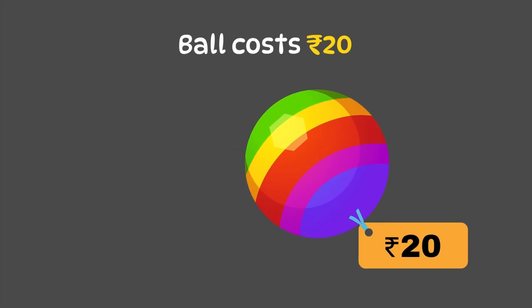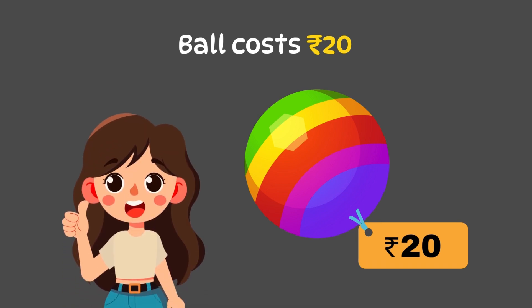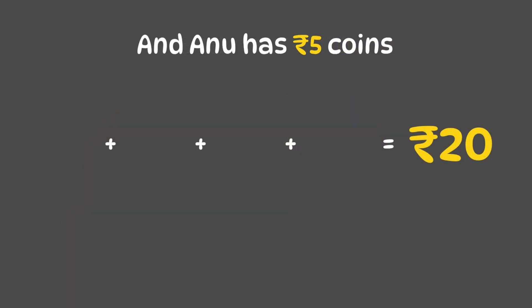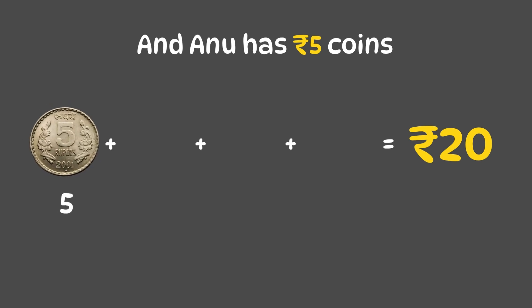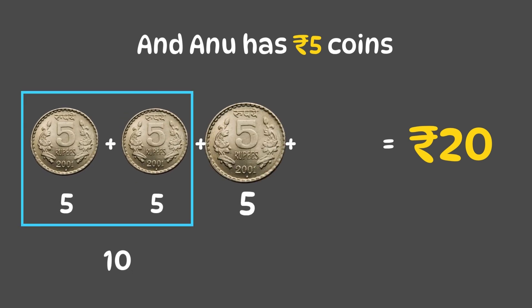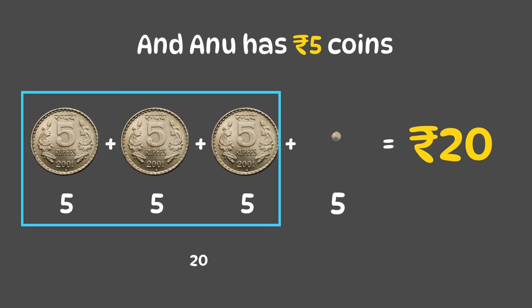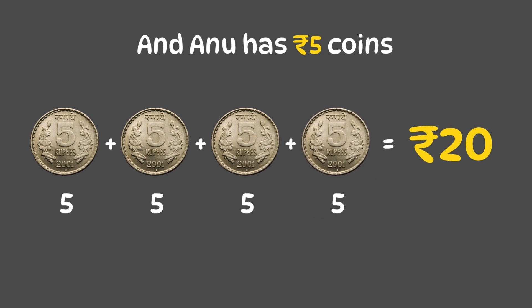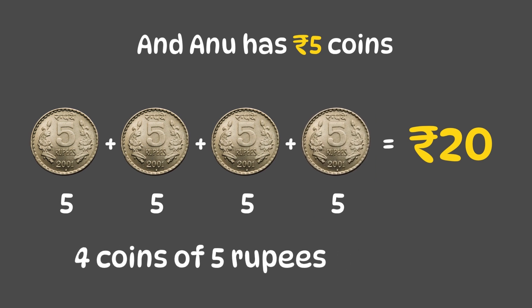This ball costs 20 rupees, and Anu has 5 rupee coins. Let's count how many coins Anu would need to make 20 rupees. 5, 10, 15, 20. She needs 4 coins of 5 rupees.